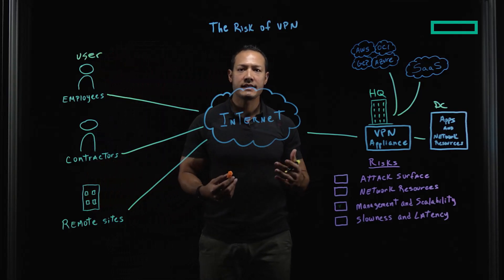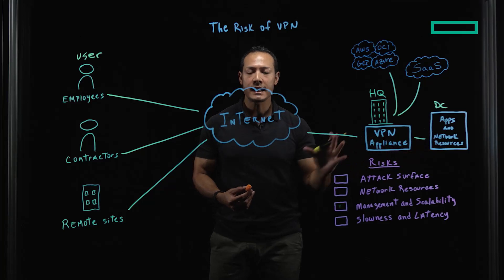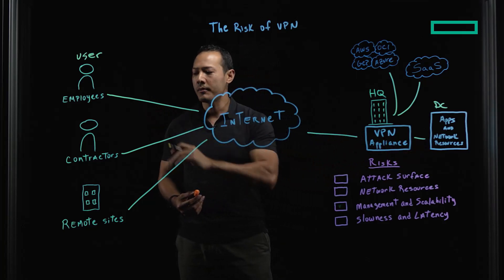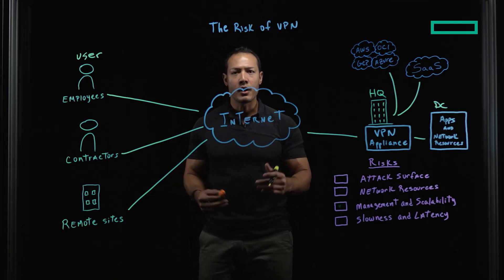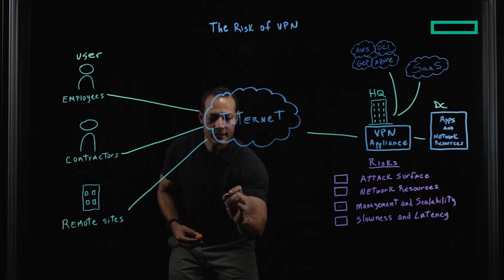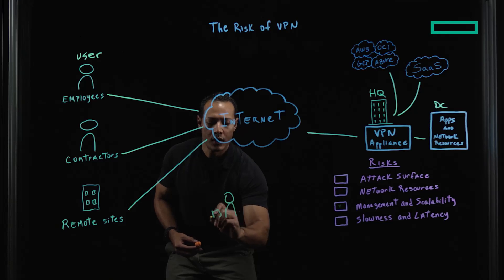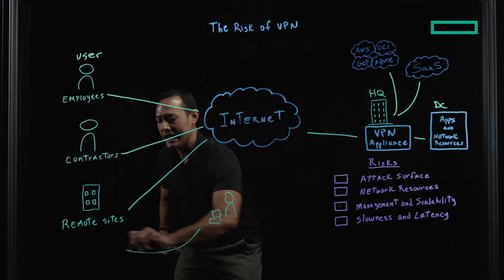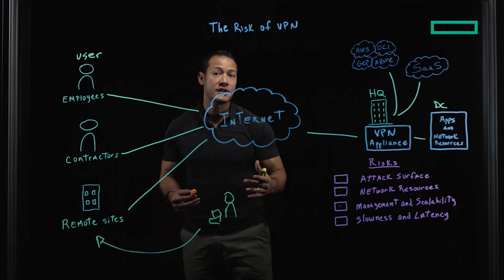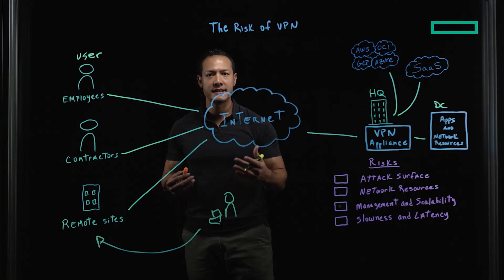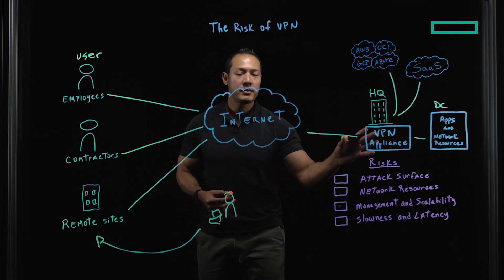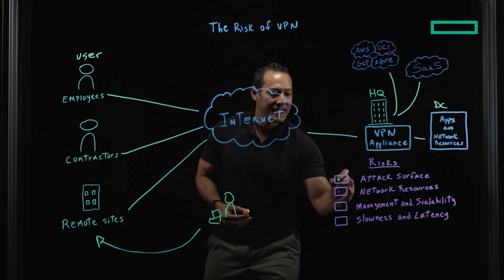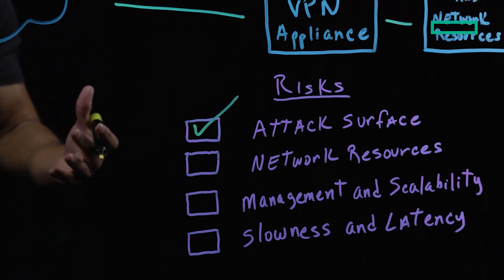The traditional legacy VPN extends the network into the employee's home and to third-party contractors, and this opens the door for bad actors on the internet to launch cybersecurity attacks such as phishing, in order to compromise these devices and inject malware or ransomware into your corporate network. So the VPN solution extends or expands your attack surface.